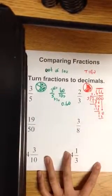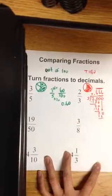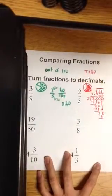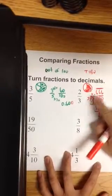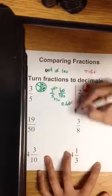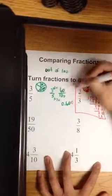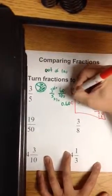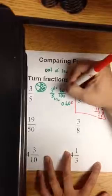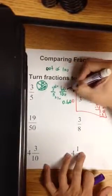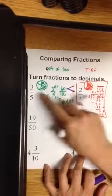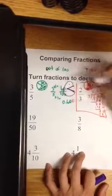So we have 0.666 and 0.60. Let's add a placeholder here. So which fraction is greater? 0.666 or 0.600? 2/3 is greater. The way I show greater is two dots for the bigger fraction, one dot for the smaller. Connect the dot. 2/3 is greater than 3/5. Remember the alligator or Pac-Man?